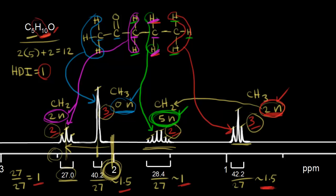To sum everything up, count all your atoms: you get five carbons, ten hydrogens, and one oxygen. This is the dot structure we were trying to find.